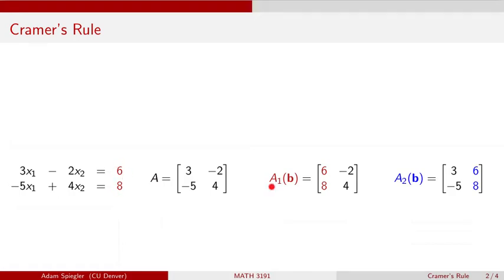So we introduced this notation that A₁(b) is the matrix that we get when I take out column 1 of matrix A and replace it with (6, 8), and I don't do anything to column 2. And then A₂(b) is what I get when I leave column 1 alone but now replace column 2 of matrix A with (6, 8). So we're going to need these ingredients when we state Kramer's rule. I want to be sure that you are clear with what this notation A₁(b) means and A₂(b) means in general.